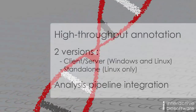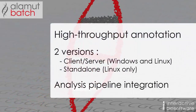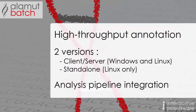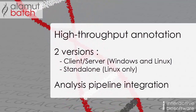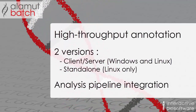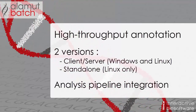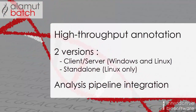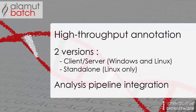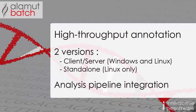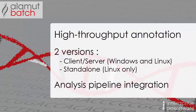Interactive Biosoftware offers a high-throughput annotation application named Alamut Batch. Alamut Batch is able to efficiently handle tens of thousands of variants. It's available as a client-server version for Windows and Linux, or as a standalone version for Linux only, and it can be easily integrated into analysis pipelines.